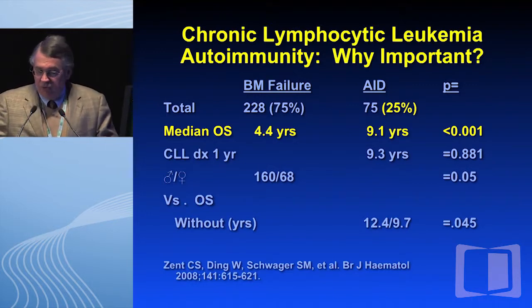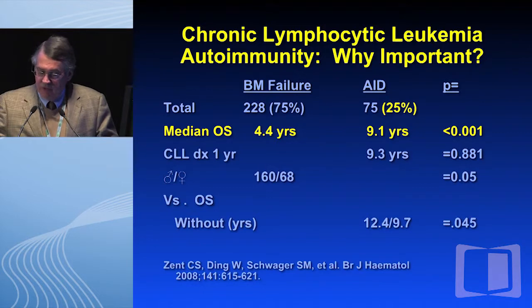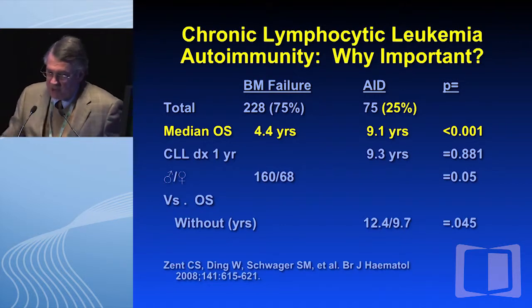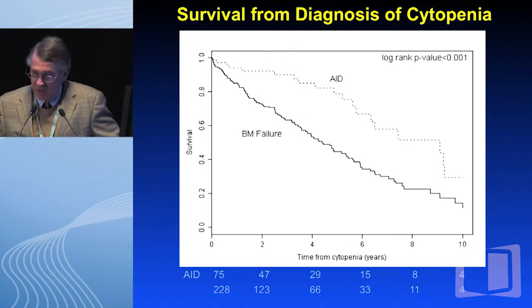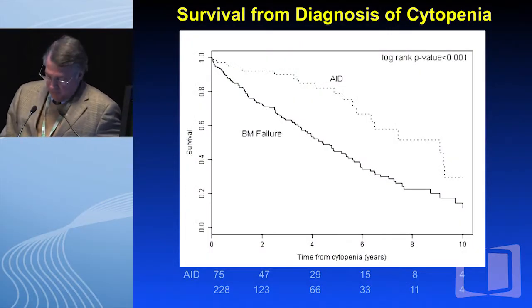This was a really important paper when it came out, looking at a reasonable number of patients and comparing bone marrow failure versus AID. In patients with bone marrow failure, the median overall survival was 4.4 years versus 9.1 years — remarkably different from before some of the newer treatments we have now. This was the original survival curve out of that data.